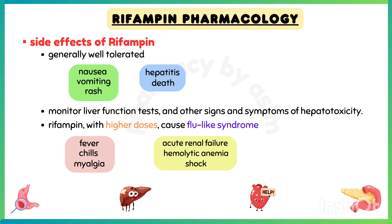Monitor liver function tests and other signs and symptoms of hepatotoxicity. When rifampin is dosed intermittently, especially with higher doses, a flu-like syndrome can occur with fever, chills, and myalgia, sometimes extending to acute renal failure, hemolytic anemia, and shock.